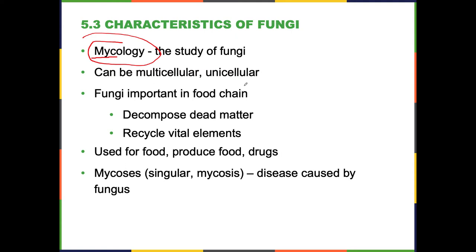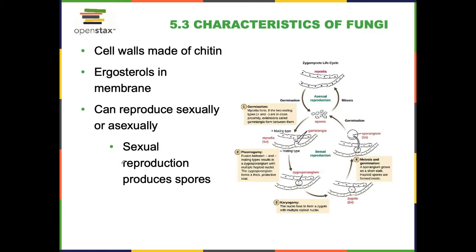Fungi do cause disease — mycoses (plural) or mycosis (singular) is a disease caused by a fungus. Quick review: fungi have cell walls made of chitin, which is characteristic of fungi. They also have ergosterols in the membrane — eukaryotic cells have sterols, fungi have ergosterols, which is similar but specific enough that if you can identify it you can classify the organism as a fungus.